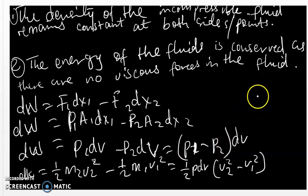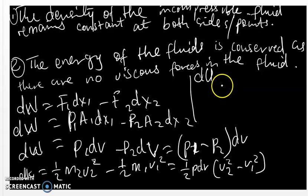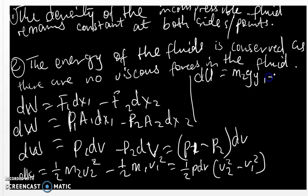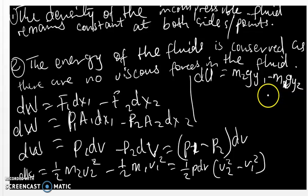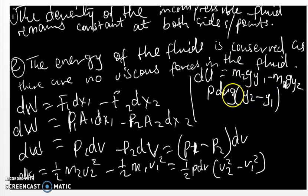The change in potential energy will be given by delta U, where delta U equals rho dV times g times (y2 minus y1). You will understand this more when we dive into computation, and we are going to continue this computation in the next video. I remain your friend, Augustin Galagash.